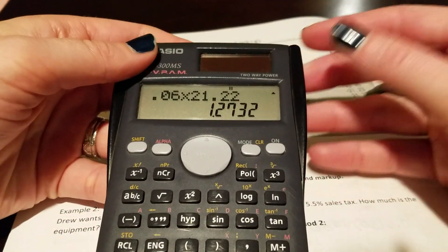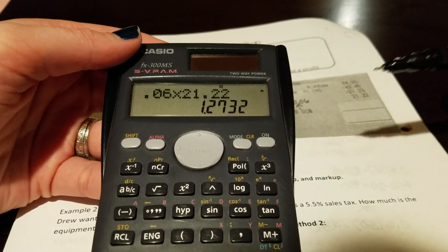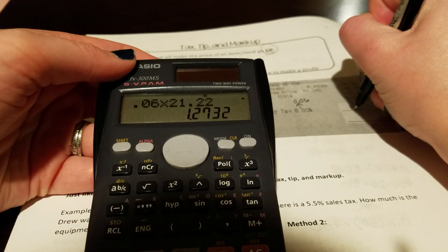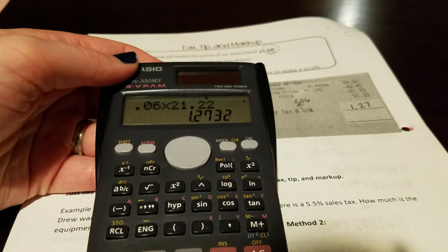I'll show you my calculator here. You get 1.273. So $1.27 itself would be our tax.